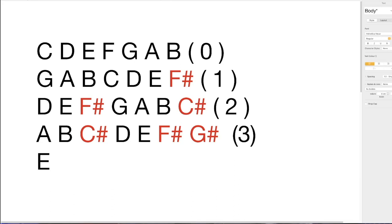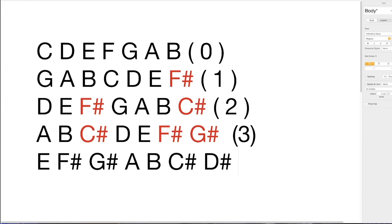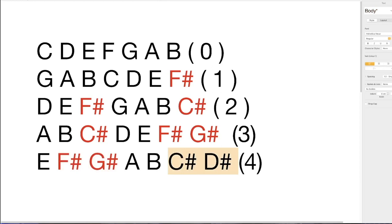Moving on, the fifth of A is E. So E major: E, F sharp, G sharp, A, B, C sharp, and the final note — we're looking for a D — becomes D sharp. That gives us four sharps in the key of E. You can see it laid out like this makes it more obvious than just note form.